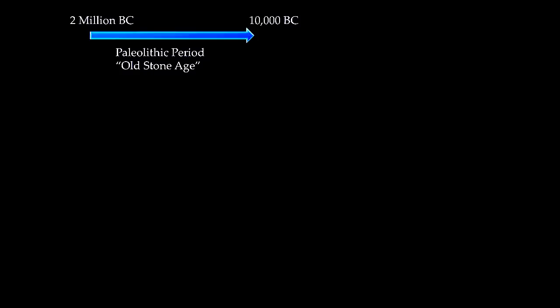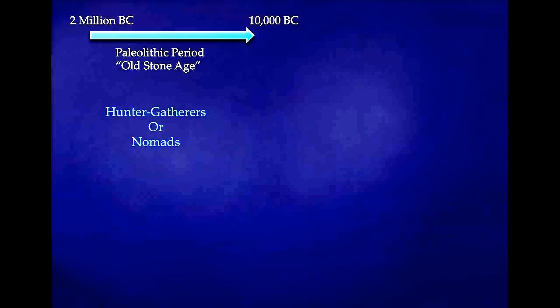The first thing we're going to look at is the Paleolithic Period, also known as the Old Stone Age. It roughly lasted between 2 million B.C. and 10,000 B.C. Unlike today, during B.C. we count down as time progresses. Through the Paleolithic Period, people lived as hunter-gatherers or nomads — people who move from place to place to find food.